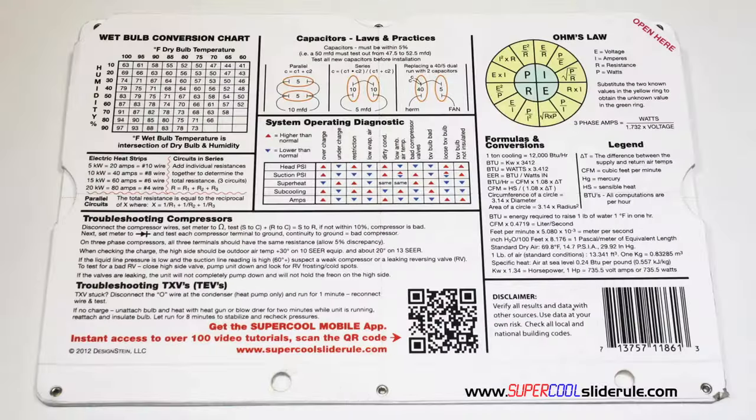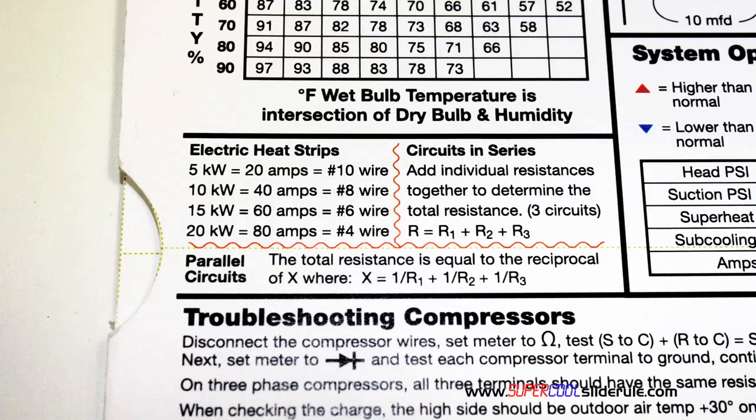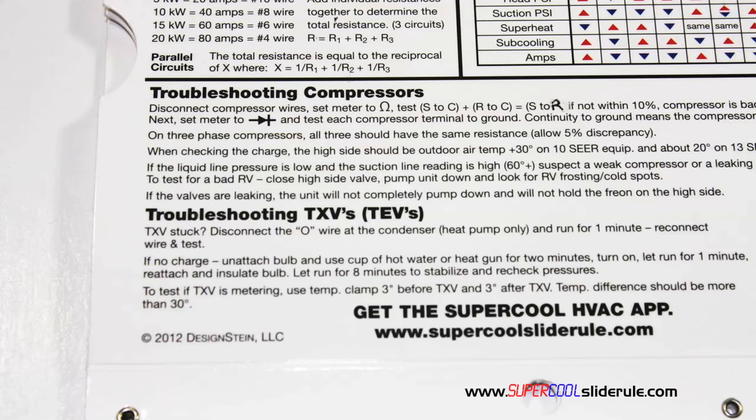The back cover contains required formulas, it has capacitors rules and practices, a wet bulb conversion chart, how to perform computations on series or parallel circuits, an electric heat strip guide, a complete system troubleshooting diagnostic chart, and how to troubleshoot compressors in TXV.